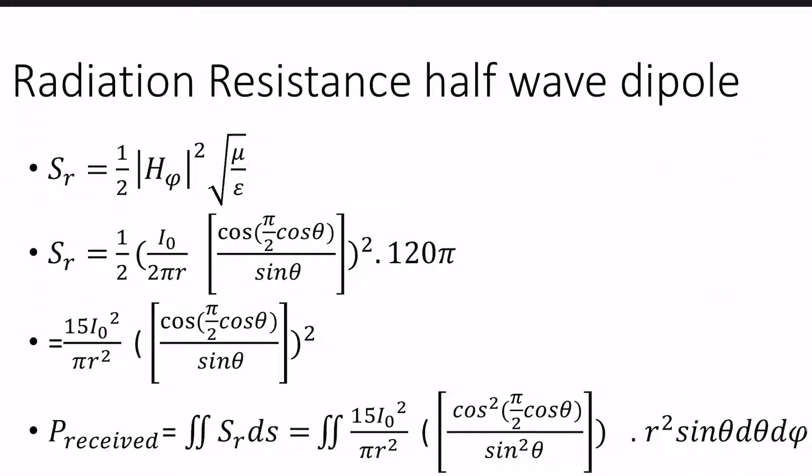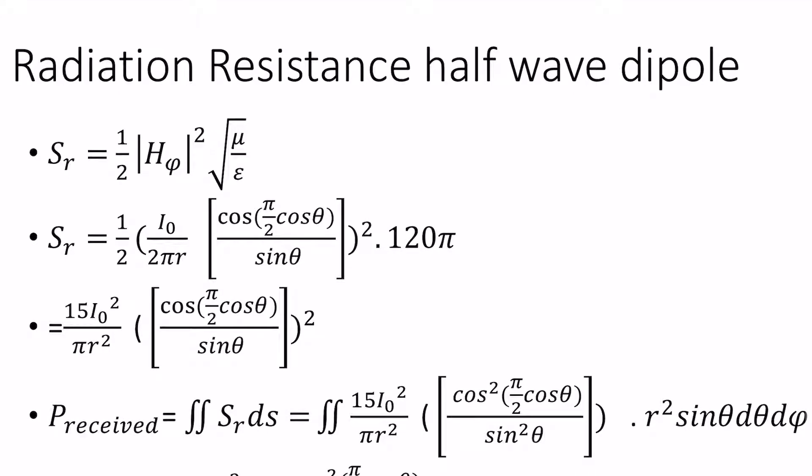Next topic in the series: we have discussed the derivations in this class — the radiation resistance of half-wave dipole. In the last class, the field of half-wave dipole was derived. For radiation resistance, in the short dipole we do the same steps.